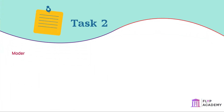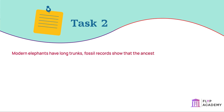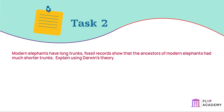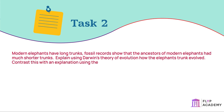Task: Modern elephants have long trunks. Fossil records show that the ancestors of modern elephants had much shorter trunks. Explain using Darwin's theory of evolution how the elephant's trunk evolved. Contrast this with an explanation using the ideas of Lamarck.